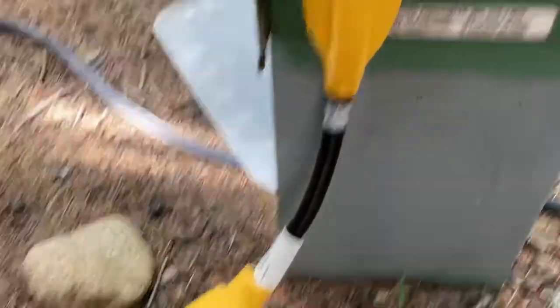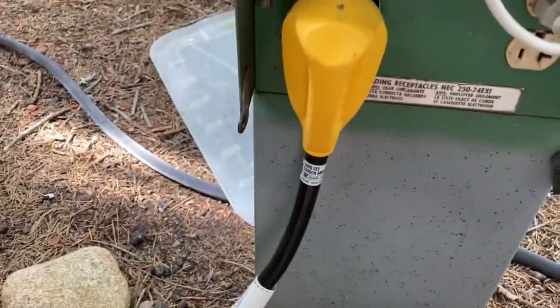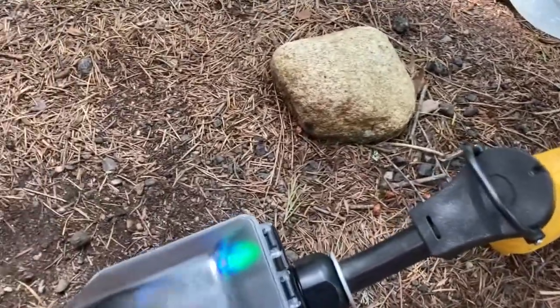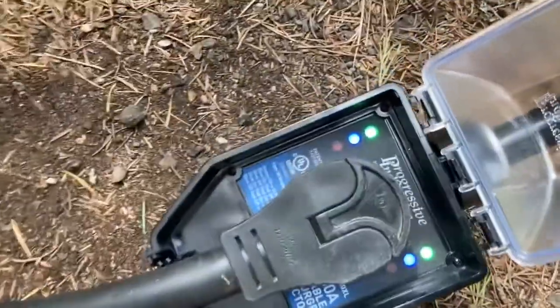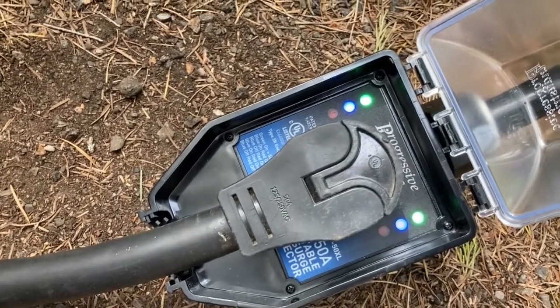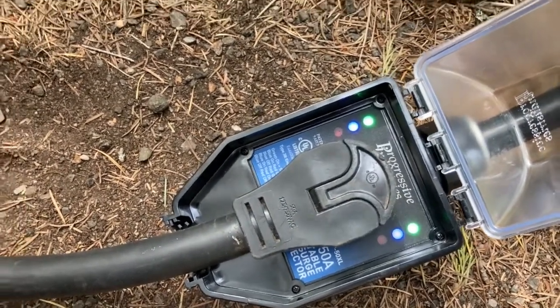So you put your adapter to go from the 50 to the 30. It splits the 30-amp into two hotlines, and then you can get the green indicator on both lines. You just can't pull a full 50-amps.